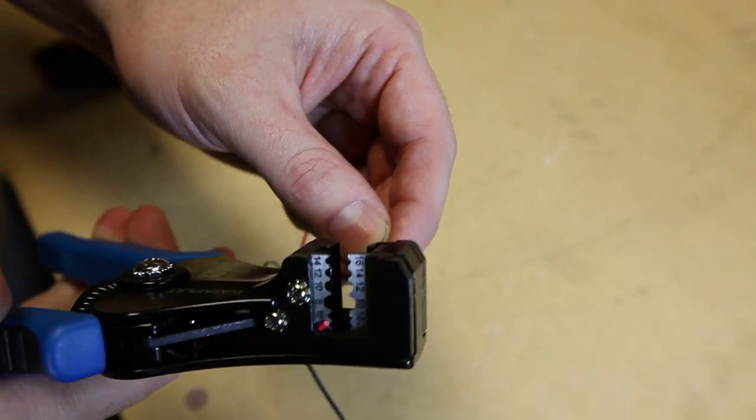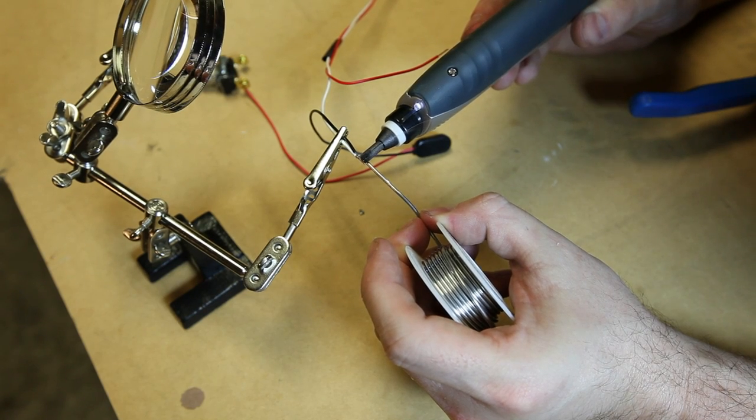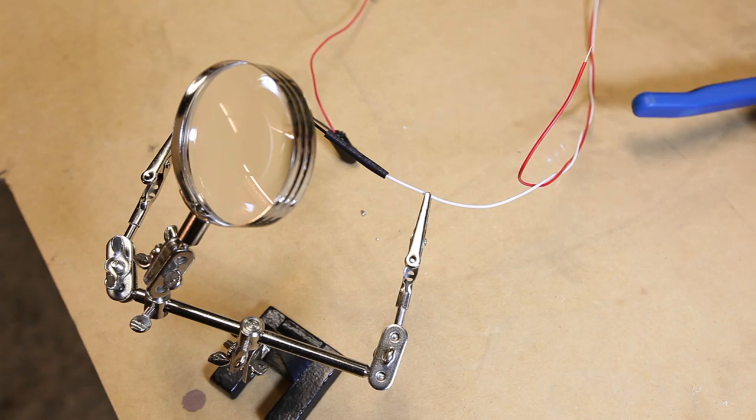Now let's strip the wire back about a quarter of an inch and connect the momentary switch to the 9-volt battery snaps and the doorbell wire. I prefer to solder the joints and use heat shrink to cover them.